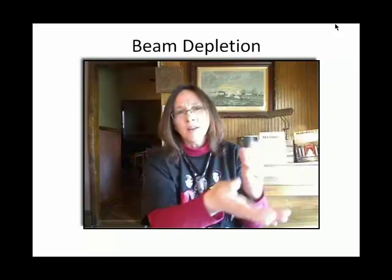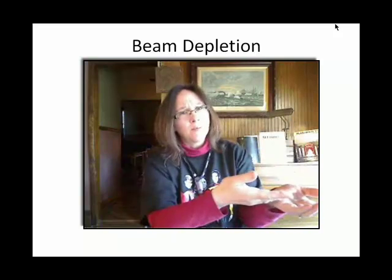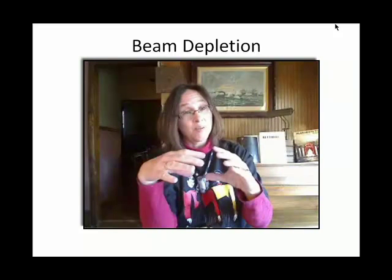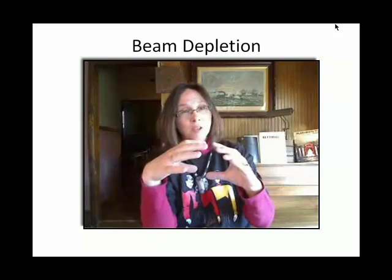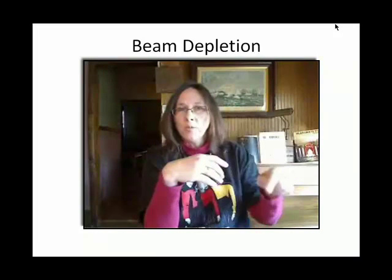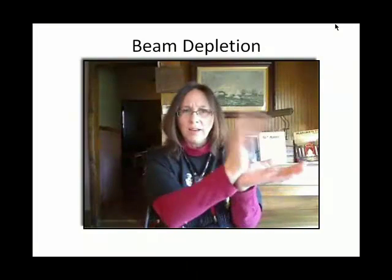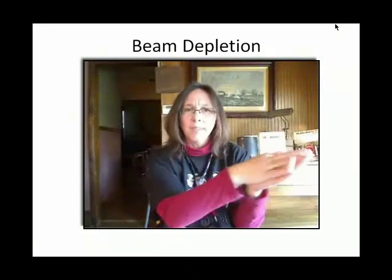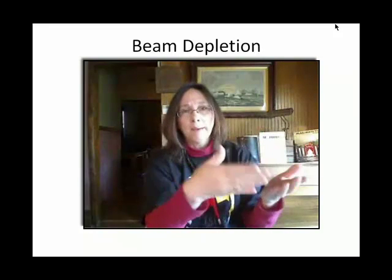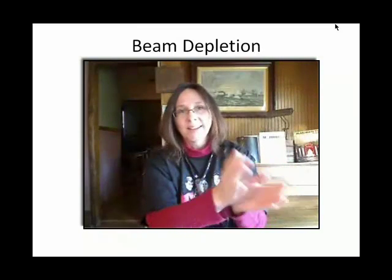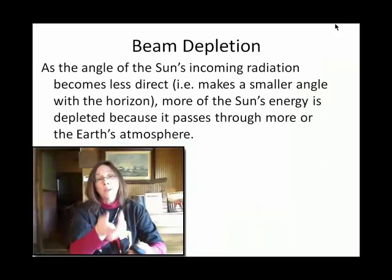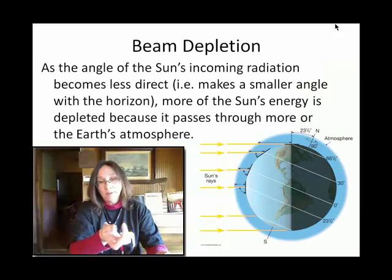The other thing I want to mention — and I'm going to show the same figure here in a minute, a globe of the earth — is that at a given time, depending upon what latitude you're at, you get a different angle of the sun. So we have beam spreading that happens with angle, and we also have what we call beam depletion that also happens with angle.